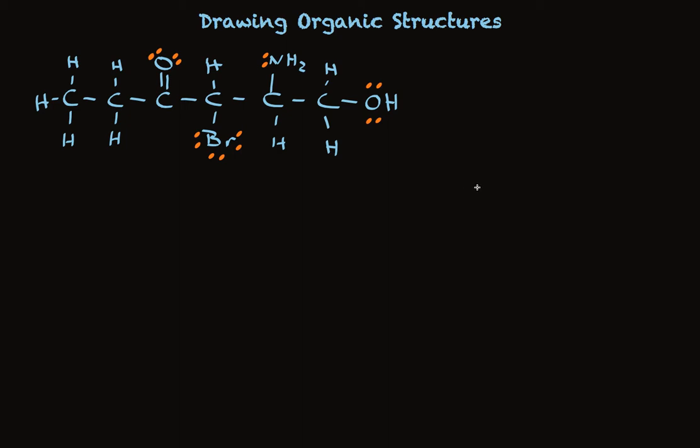Carbon, of course, has no unshared pairs in a stable neutral molecule. So this is a Lewis structure. It adequately shows which atoms are bonded to which.